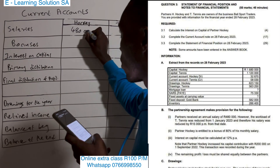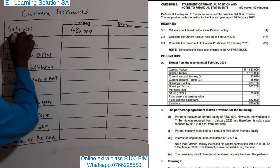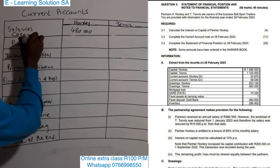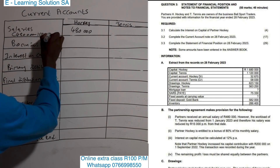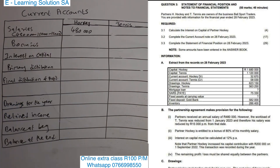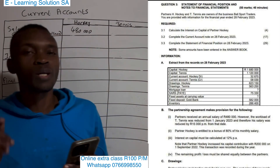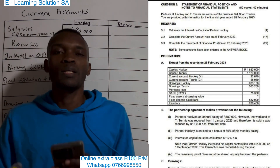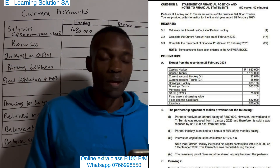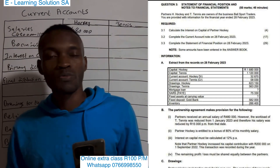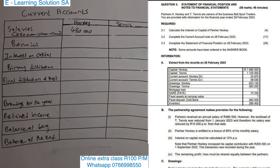For Tennis: 480,000 minus 15,000 per month. How many times? Twice — because the year ends in February and the reduction started from January, so we only subtract for January and February, which is two months. That gives Tennis a total salary of 450,000. If the reduction applies for only one month, you would subtract just once.